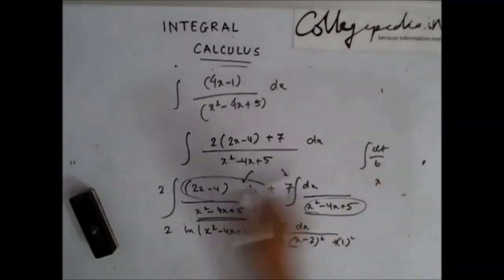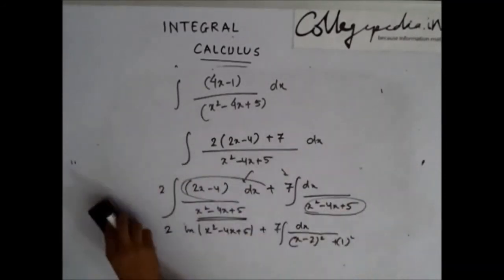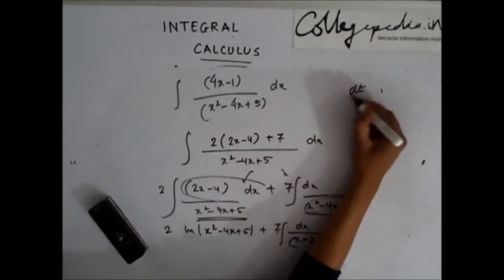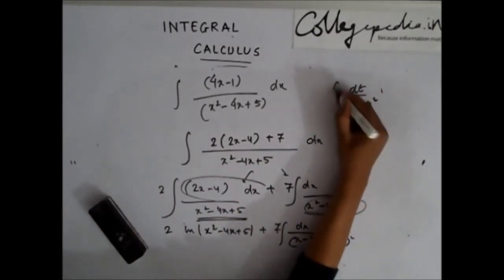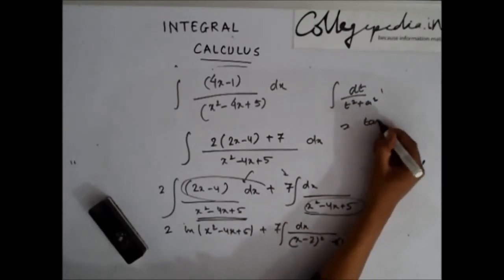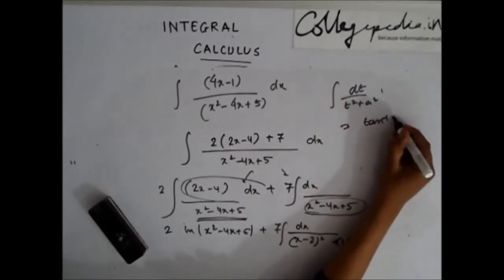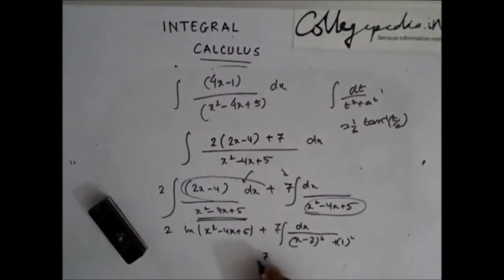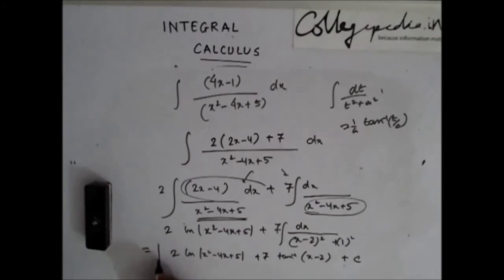Now this is of the form of dt by t square plus a square integration whose answer I know. So this I can write it as tan inverse x minus 2 and this is ln of x square minus 4x plus 5. So my final answer is this.